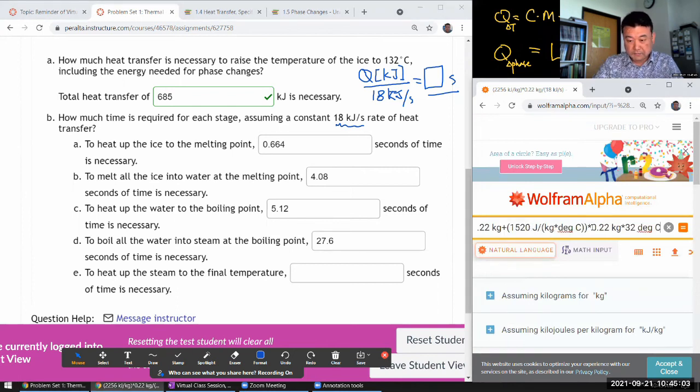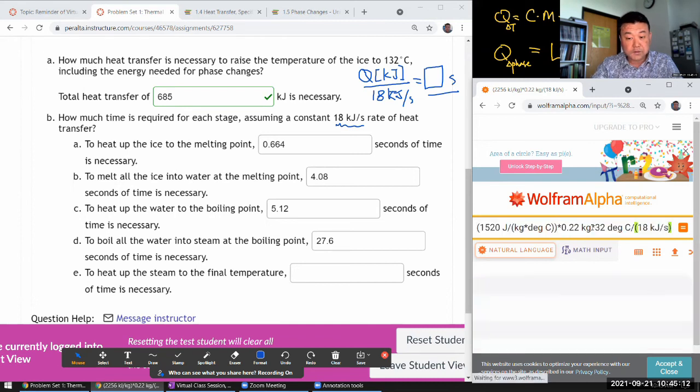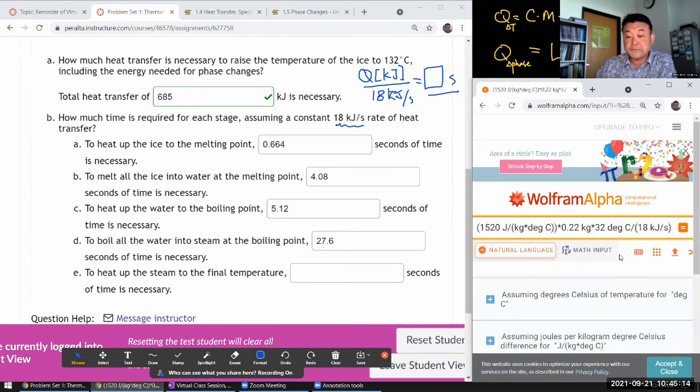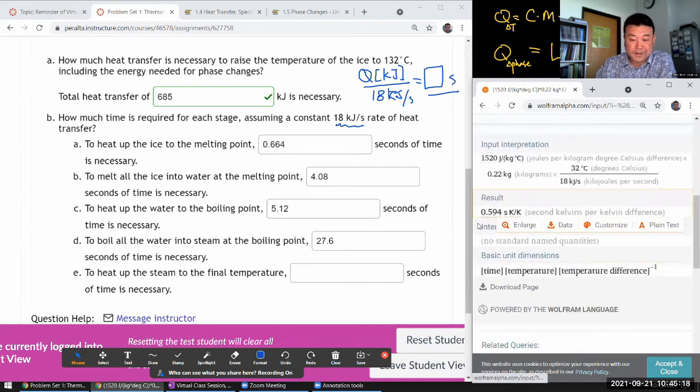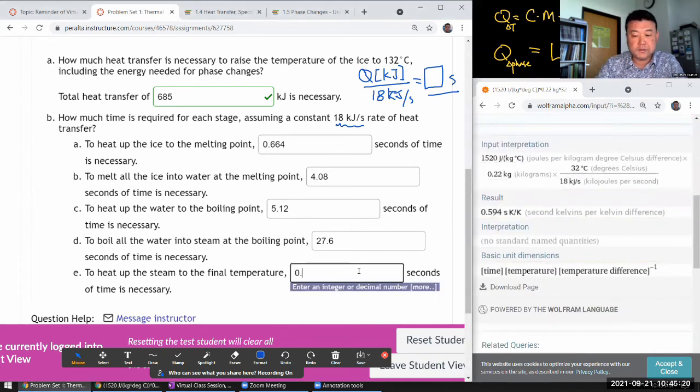I got one last thing remaining here. This is the last step: heating up the steam to the final given temperature. That takes barely any time. 0.594 seconds. Yeah, that's it.